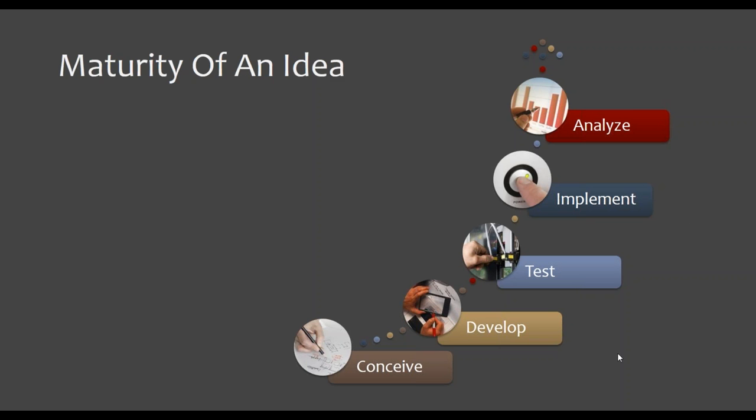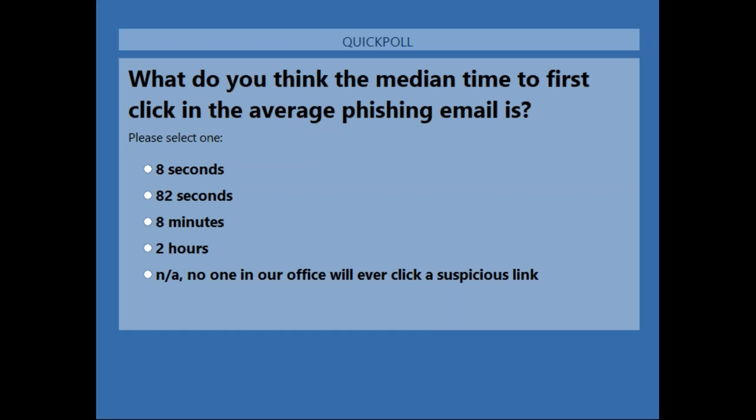It's time for the third poll question — this is also a little bit of a memory test. What do you think the median time to first click in the average phishing email is? Options are: 8 seconds, 82 seconds, 8 minutes, 2 hours, or not applicable — no one in our office will ever click a suspicious link. Please go ahead and select your response and click Submit. Remember, voting in all three poll questions is required in order to earn CPE.